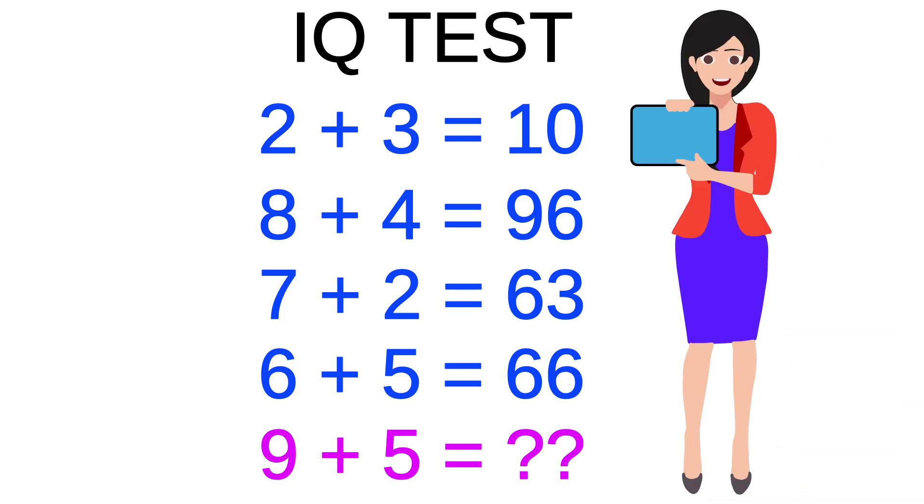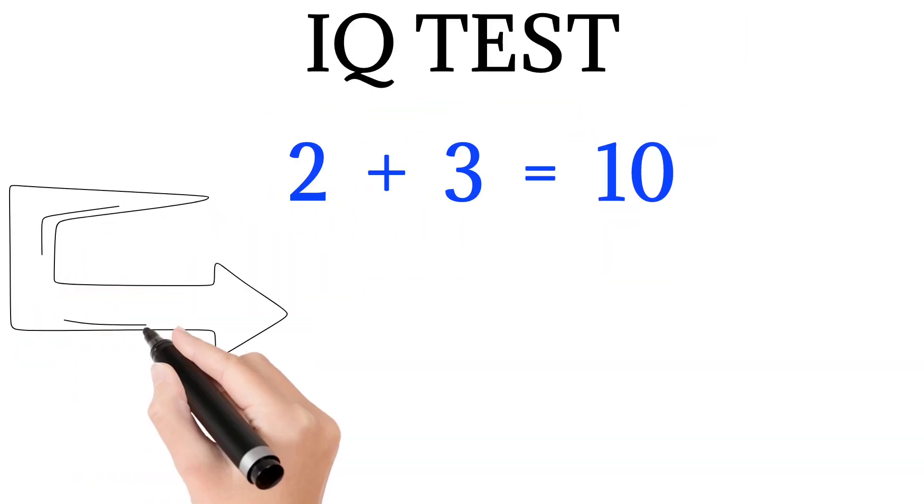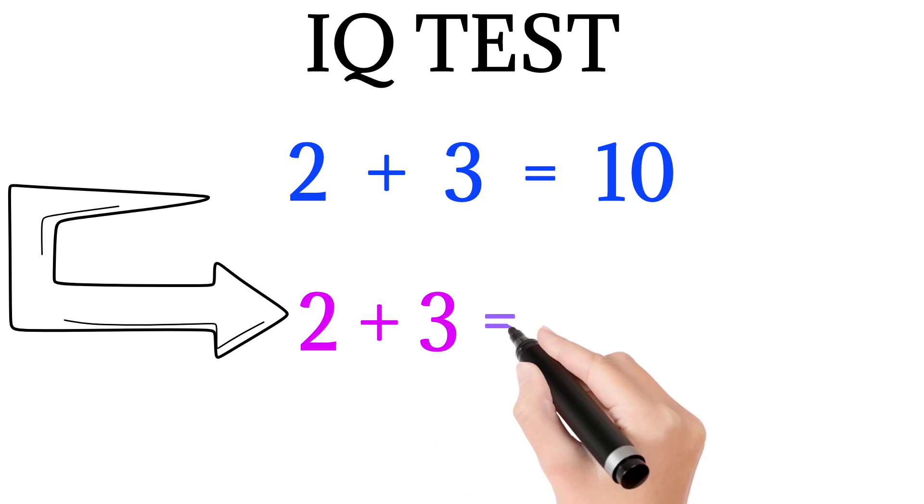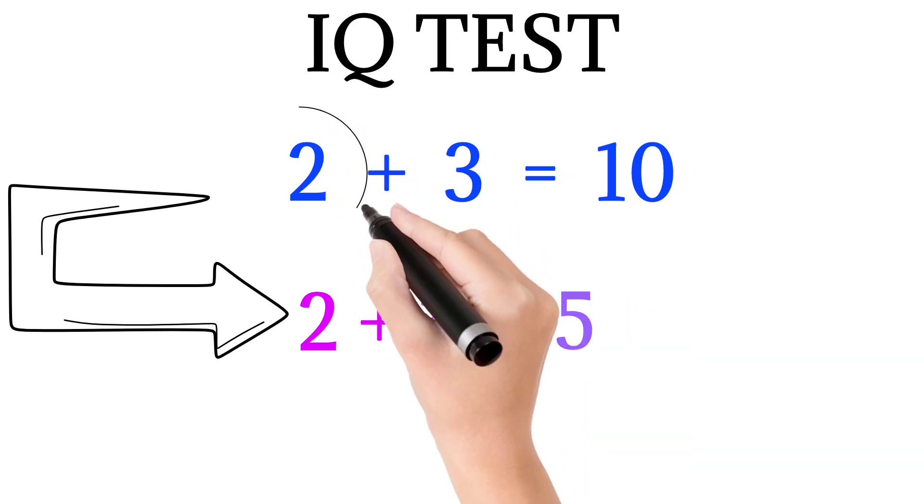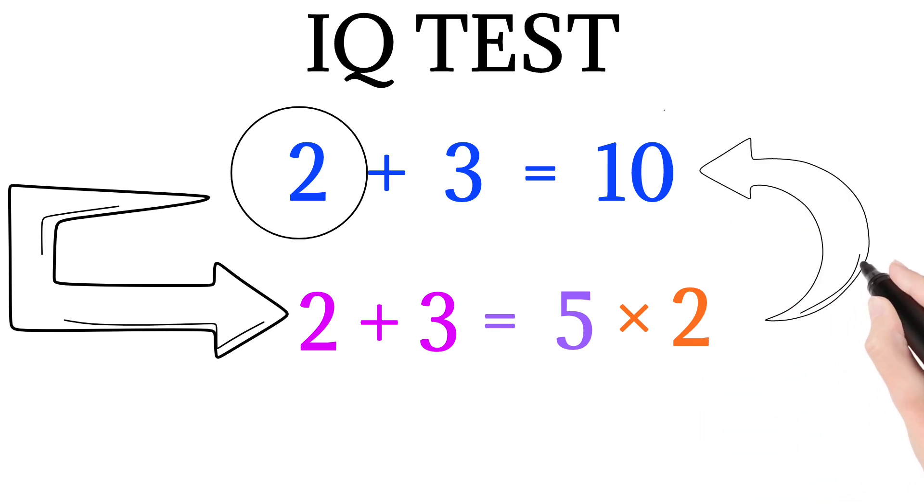If we add both the numbers, that is 2 plus 3, we get 5. And now if we multiply it with the first number, that is 2, we get 10.